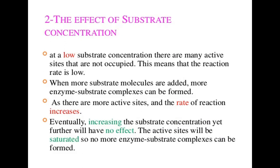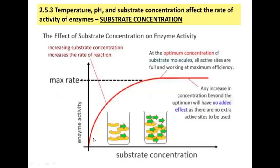Looking at the graph, enzymatic activity is plotted on the y-axis and substrate concentration on the x-axis. The effect of substrate concentration on enzymatic activity shows that increasing substrate concentration increases the rate of reaction. At the optimum level, shown by the red dotted line, we reach the maximum rate.